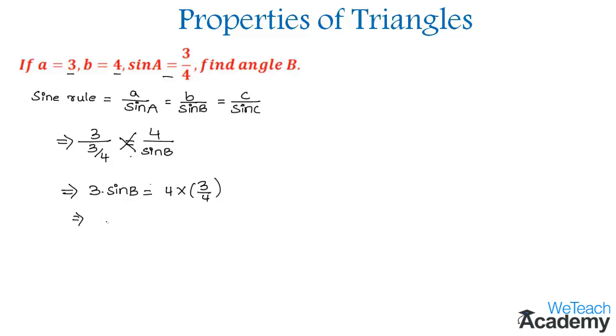The 4s cancel and we get 3 sin B = 3. Canceling 3 on both sides, we get sin B = 1. Since 1 is the value for sin 90 degrees, angle B = 90 degrees. This is how we can find the angle.